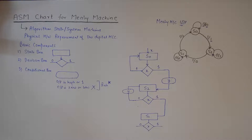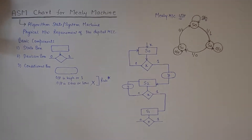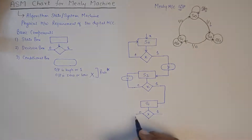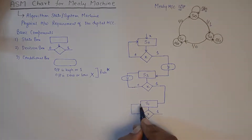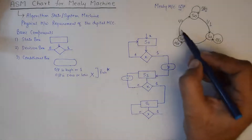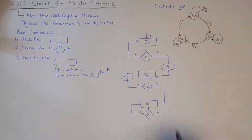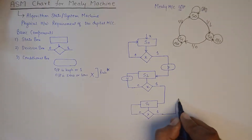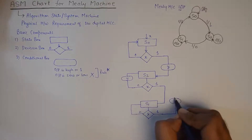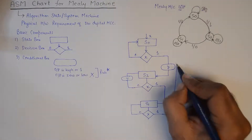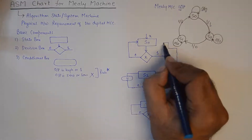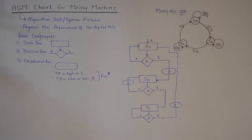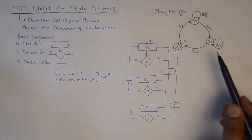Finally, when at S1 we encounter two options — a 0 or a 1. A 0 at S1 takes us back to S1 without any conditional box because the output is 0. A 1 takes us back to S0, and with a conditional box because the output is also 1 — so with the condition that the output is present as 1, we go back to S0. That is how we draw the ASM chart for a Mealy machine state diagram.